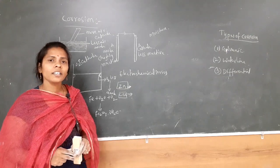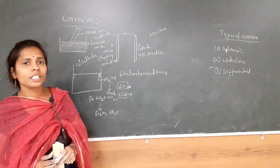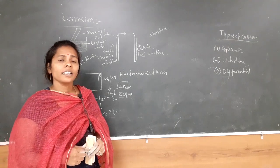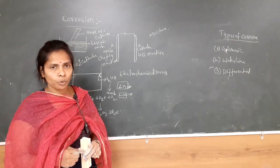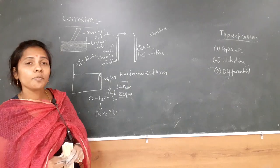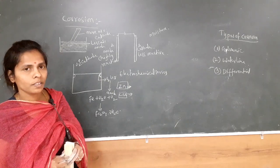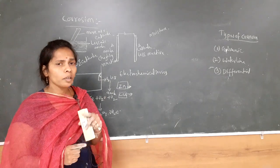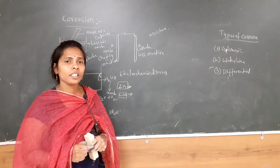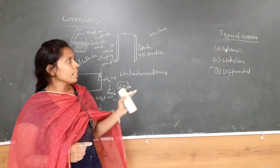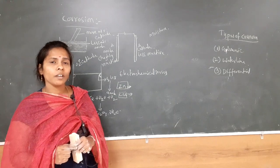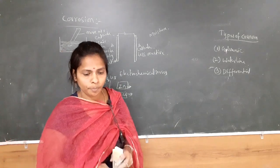In general, wherever the oxygen or air concentration is less, that part is going to be corroded. That concludes the types of corrosion. One of these questions is compulsory in the external examination. With this, I have completed the types of corrosion. See you in the next class. Thank you so much.